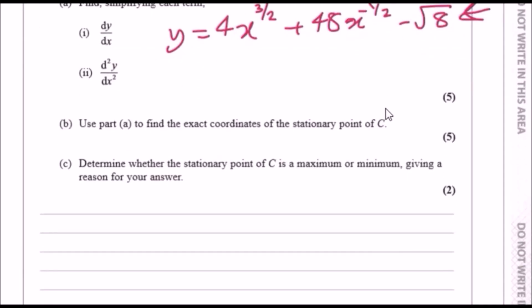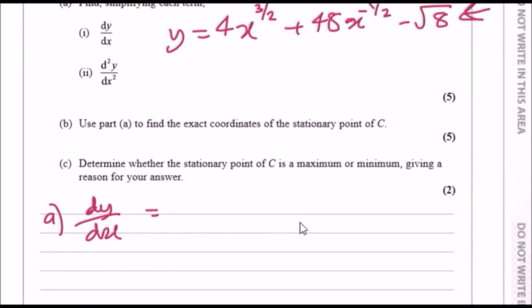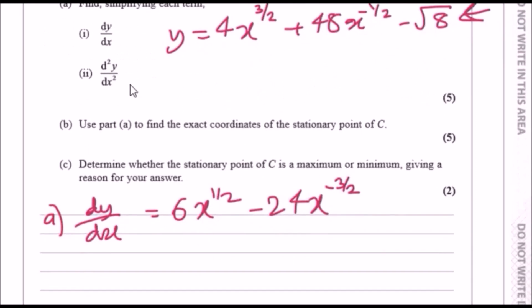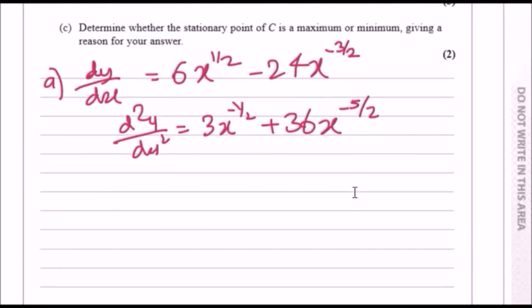Differentiating for part a: drop 3 over 2 down — 4 times 3 over 2 gives 6 — and subtract one from the power to get 6x to the power half. For the second term, 48 times minus half gives minus 24, and subtracting one from the power gives minus 24x to the power minus 3 over 2. For the second derivative, differentiate again: 6 times half gives 3x to the power minus half, and minus 3 over 2 times 24 gives positive 36x to the power minus 5 over 2.